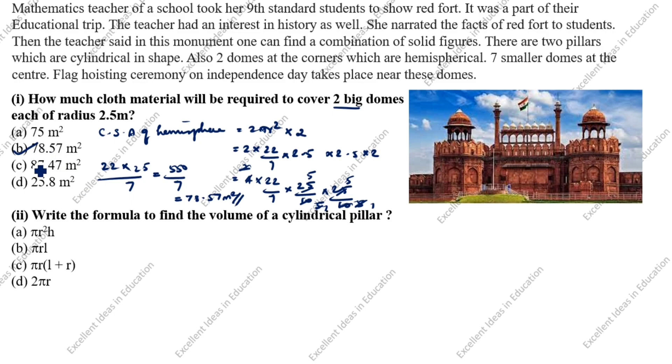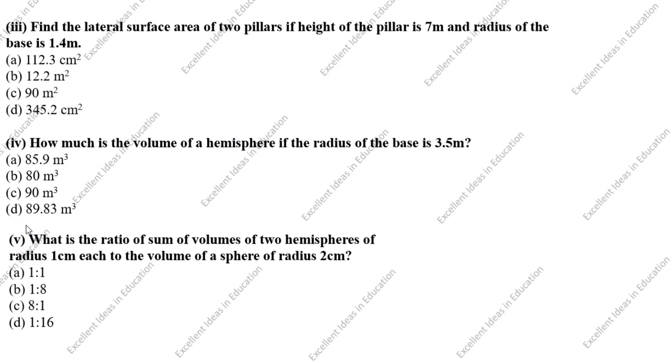Next, write the formula to find the volume of a cylindrical pillar. We will take the volume of cylinder formula: Volume of cylinder = πr²h.